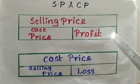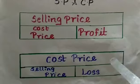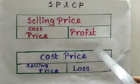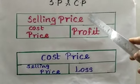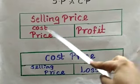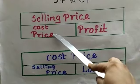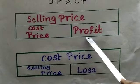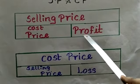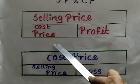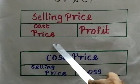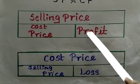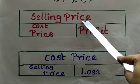The first one is the profit bar model. In the profit bar model, if we want to find the selling price, we should add the cost price with the profit. If we want to find the cost price, subtract the profit from the selling price.